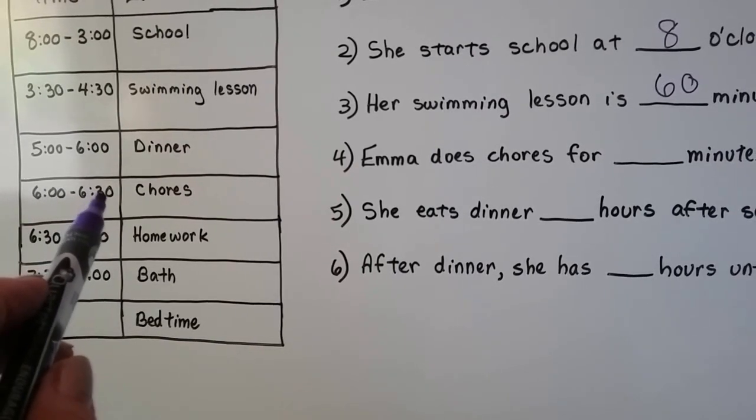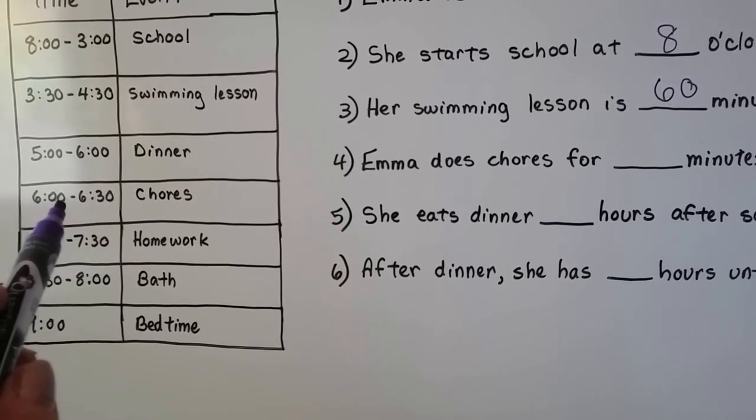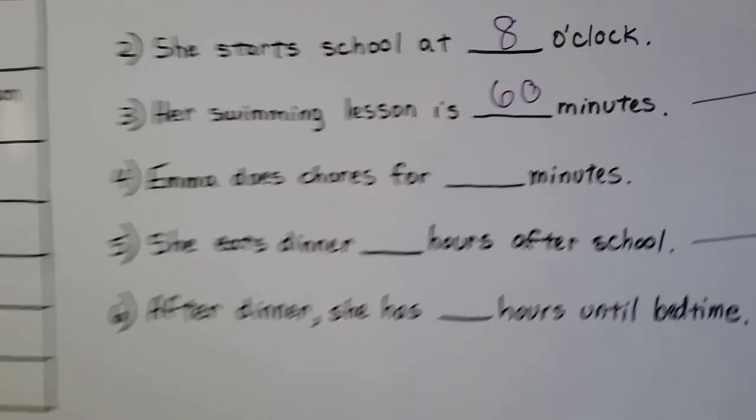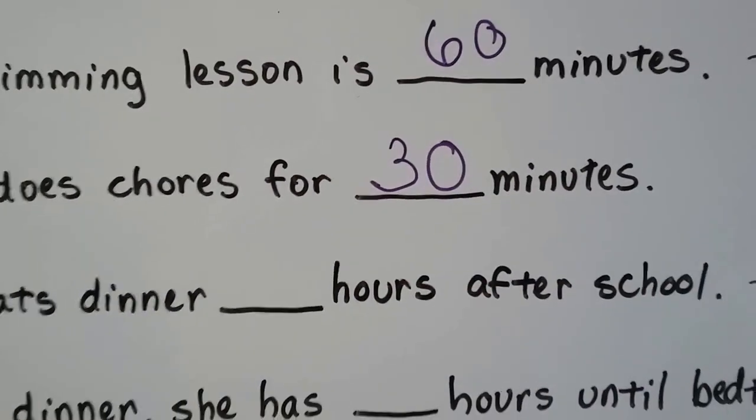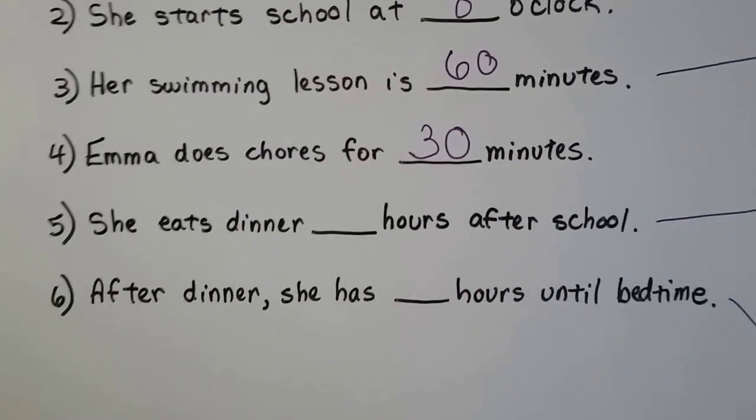That's 30 minutes. This is zero minutes, now it's 30 minutes. So that was an easy one. She does chores for 30 minutes. She probably helps with the dishes or takes out the garbage, right, after dinner.